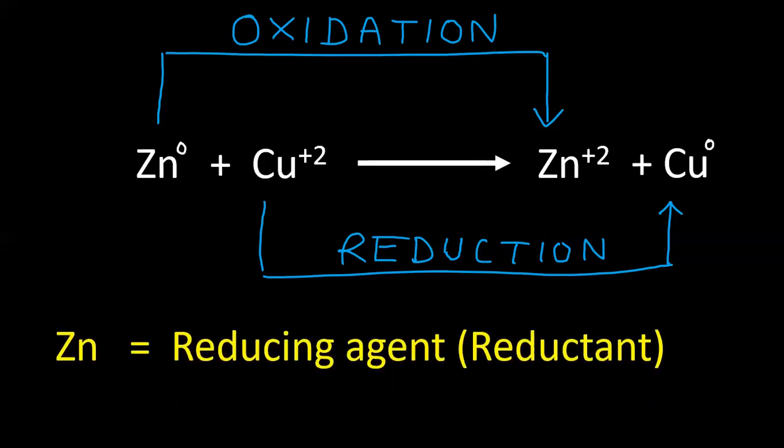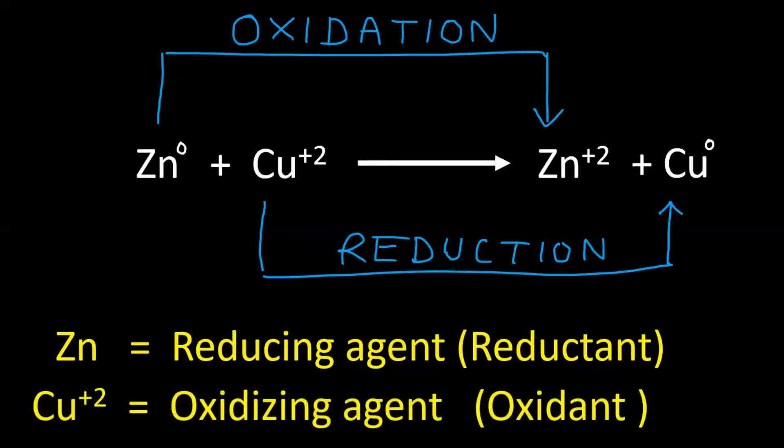What is the role of zinc here? Zinc is reducing the Cu²⁺ ions. It is a reducing agent. Zinc reduces the opposite material, so it is called a reducing agent. What do you call it? Reductant. Cu²⁺ is an oxidizing agent. It oxidizes the opposite material.